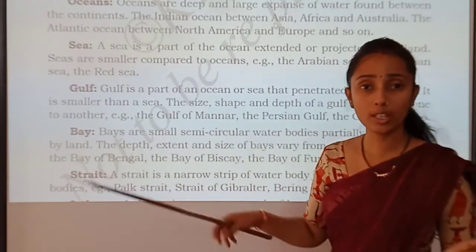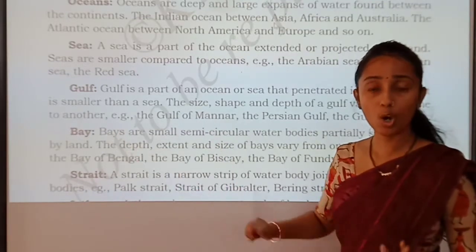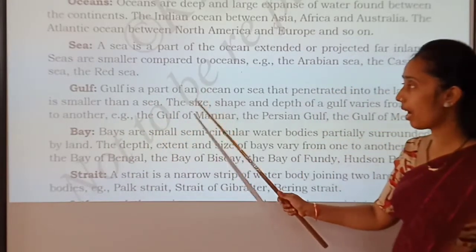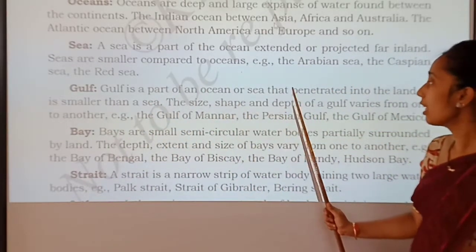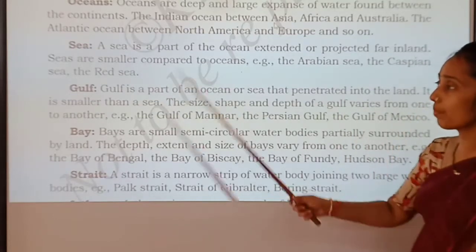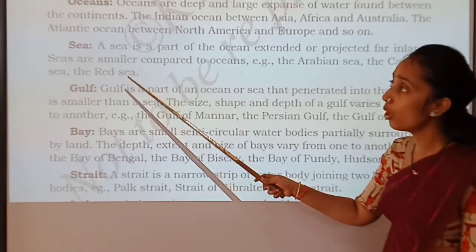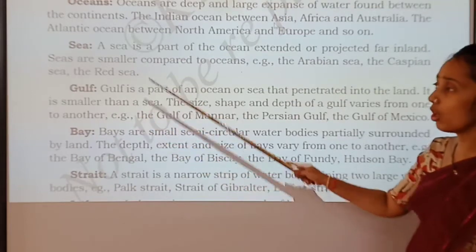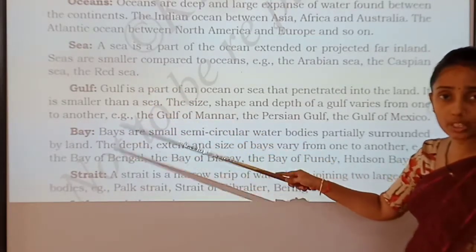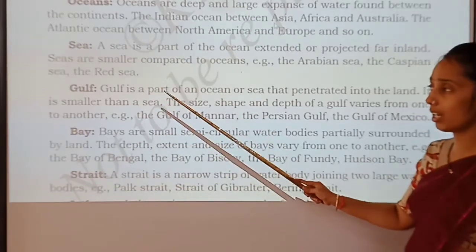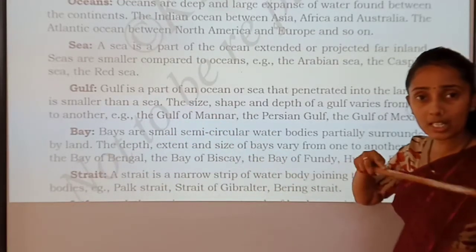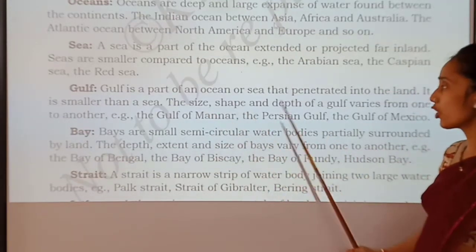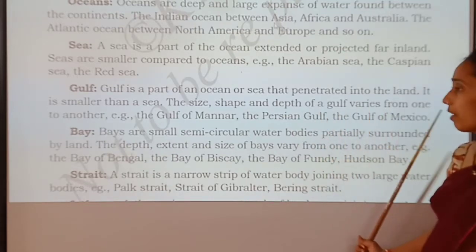To repeat: gulf is a part of an ocean or a sea that penetrates into land. It is smaller than a sea. When compared to ocean, sea is small; when compared to sea, gulf is smaller. Gulf is surrounded by water but in the middle you will get to see land. The size, shape and depth of the gulf varies from one to another.